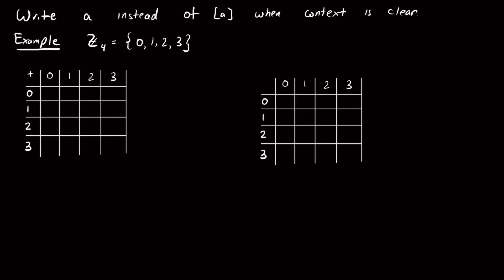Let's fill in the addition table for Z mod 4. The top row and first column are not very interesting: 0 + 0 = 0, 0 + 1 = 1, 0 + 2 = 2, 0 + 3 = 3, and similarly 1 + 0 = 1, 2 + 0 = 2, 3 + 0 = 3. These are straightforward — adding 0 doesn't change anything.